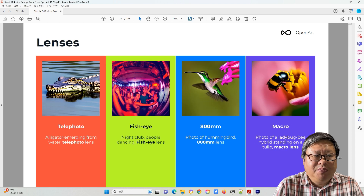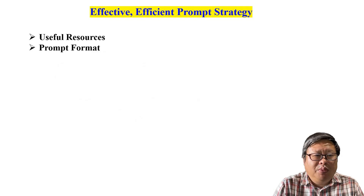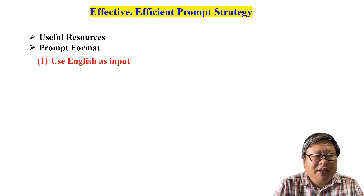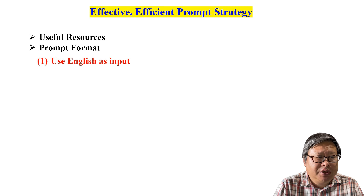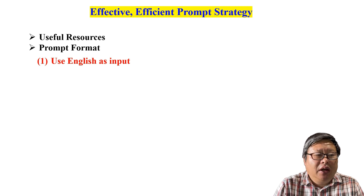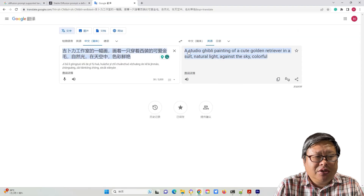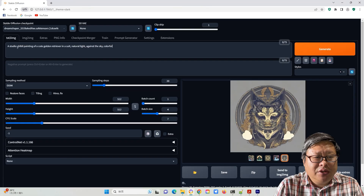You should read this book first. From this book, we know an important rule: the prompt format is very important, and there are several rules you should obey. First, even though it supports other languages such as Japanese, using English is the best way. Always use English as the input language. Using Google Translate is a good choice.